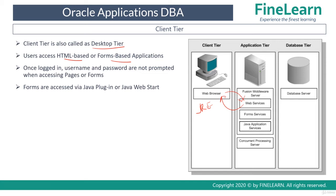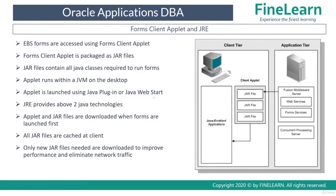In case the user requests a form, there are two ways in which forms can be accessed: either via a Java plugin or Java web start. In previous lessons we have already seen what is a form and how the user logs in into Oracle E-Business Suite and accesses a form. So now in this lesson we will be seeing what is forms client applet, what is JRE, and also what is Java plugin and Java web start.